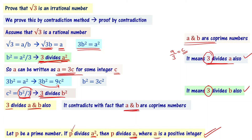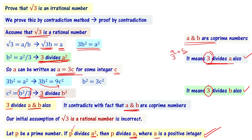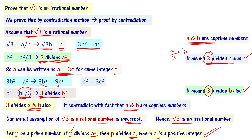This contradiction arises because we initially assumed root 3 is a rational number. That is a wrong assumption. Our initial assumption that root 3 is a rational number is incorrect. Because of this incorrect assumption, we get that a and b are co-prime but also have common factor 3 — a contradiction. So our initial assumption is wrong.